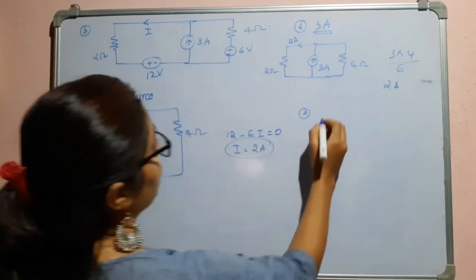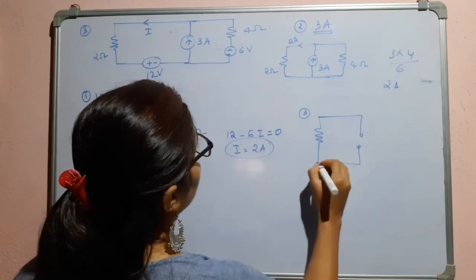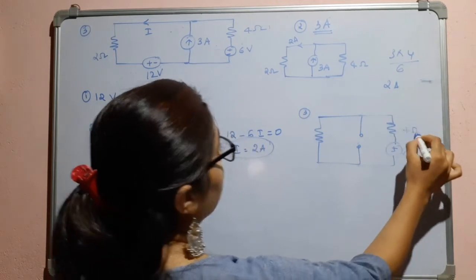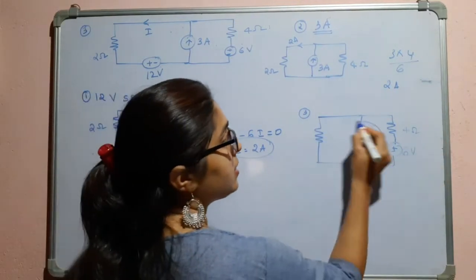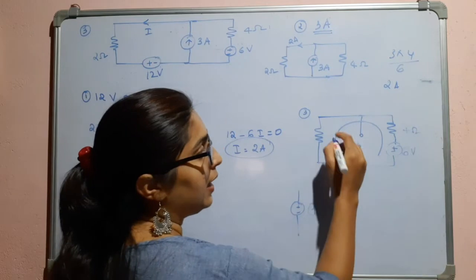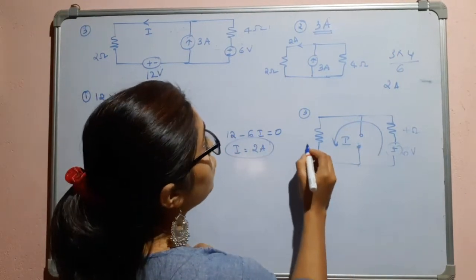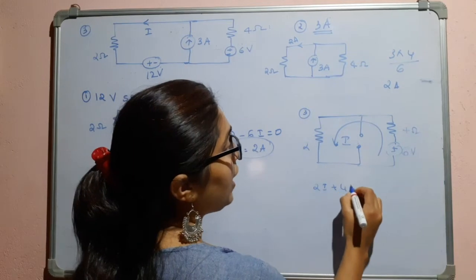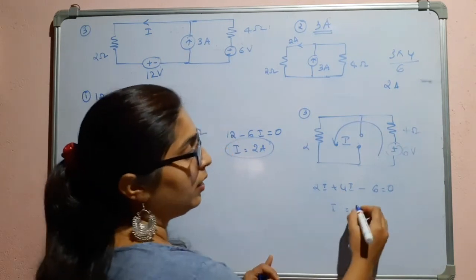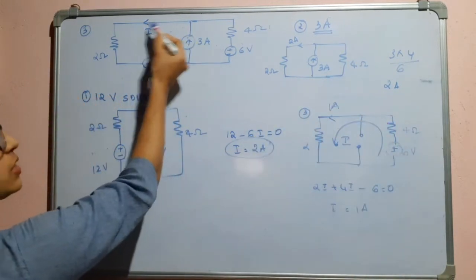Now let us take the 6 volt source. I will short the 12 volt source and open the 3 ampere source. The redrawn circuit has 4 ohms, 2 ohms, and 6 volts. Taking the current direction from negative to positive, and applying KVL: 2i plus 4i minus 6 equals 0. So i is equal to 1 ampere, flowing in this direction.